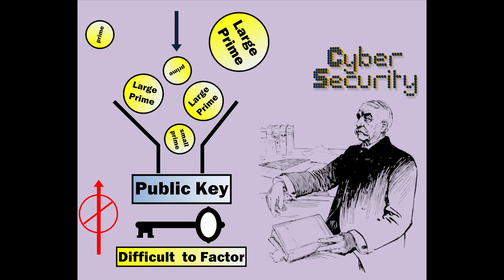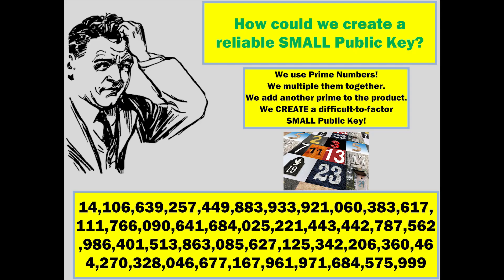First, we must understand that public keys are made up of large primes, and therefore are difficult to factor. So, how could we create a reliable small public key? We use prime numbers and we multiply them together.